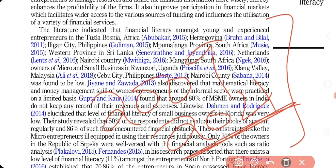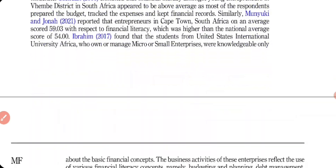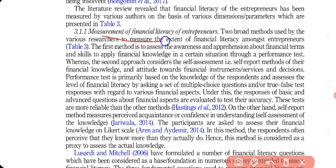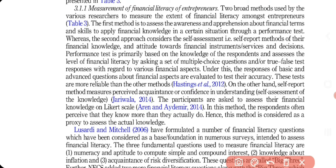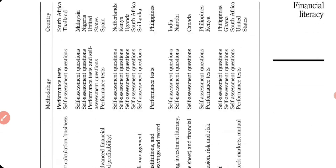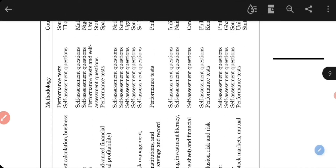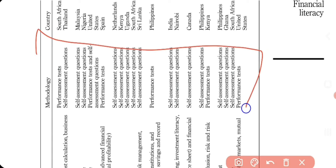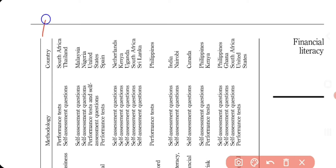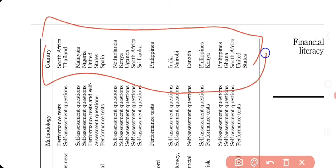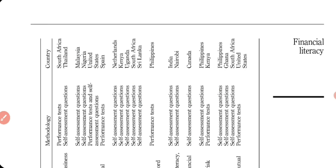I included a section on the measurement of financial literacy of entrepreneurs, covering the various methodologies and parameters used by different authors. I created a table with the author's name, dimensions, parameters, types of methodologies, and the countries where the studies took place. Notably, there was only one study from India, indicating a research gap.